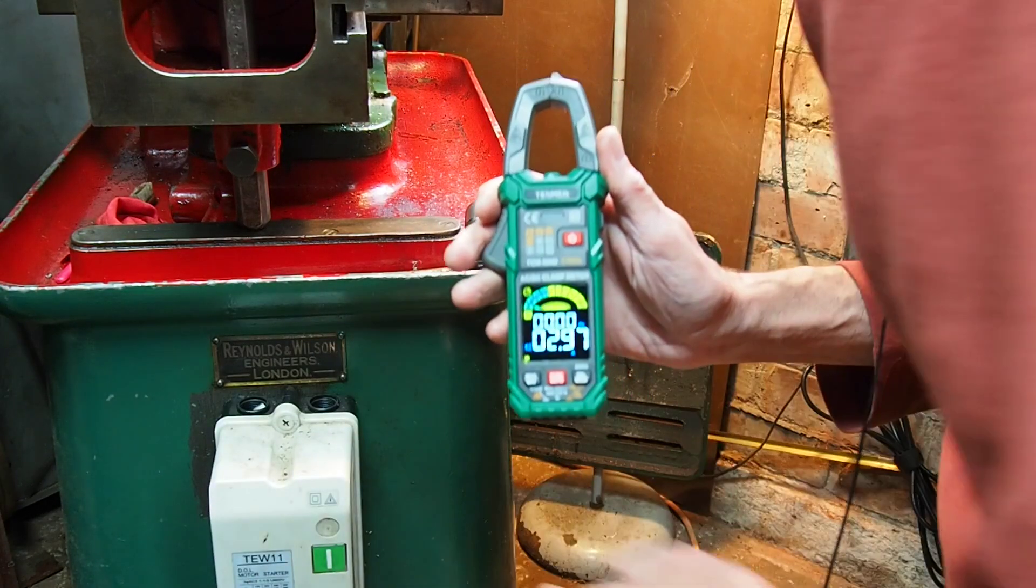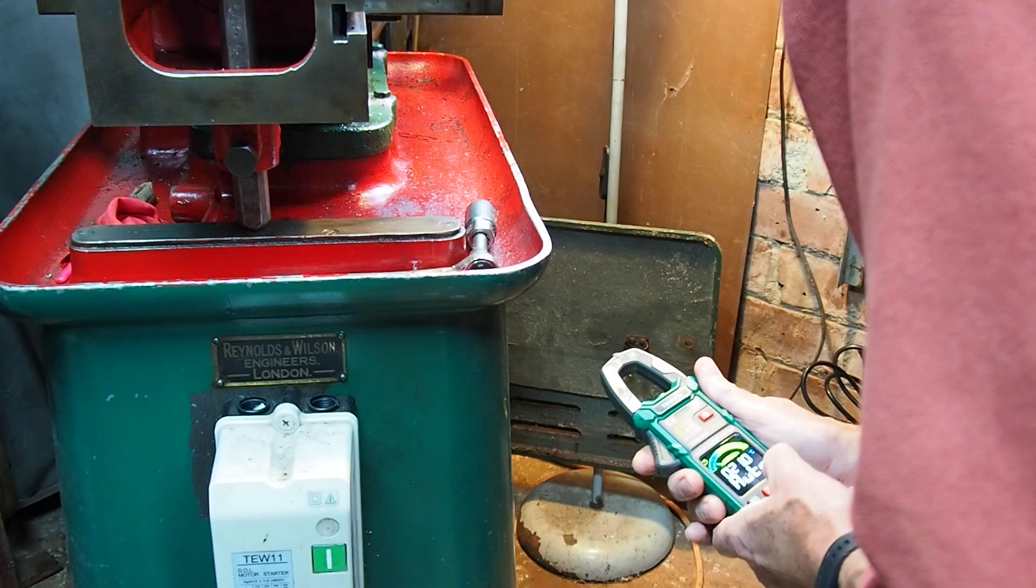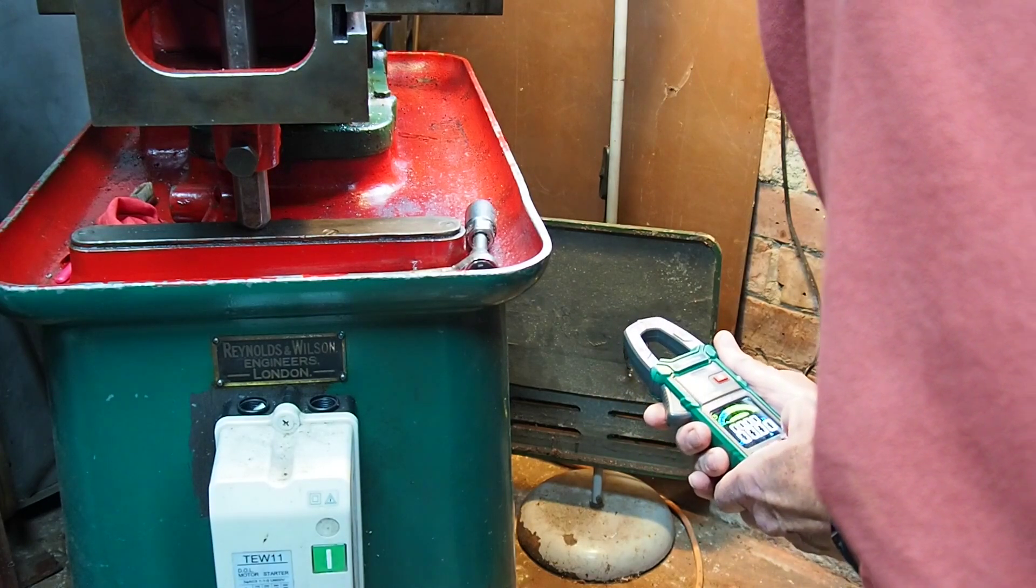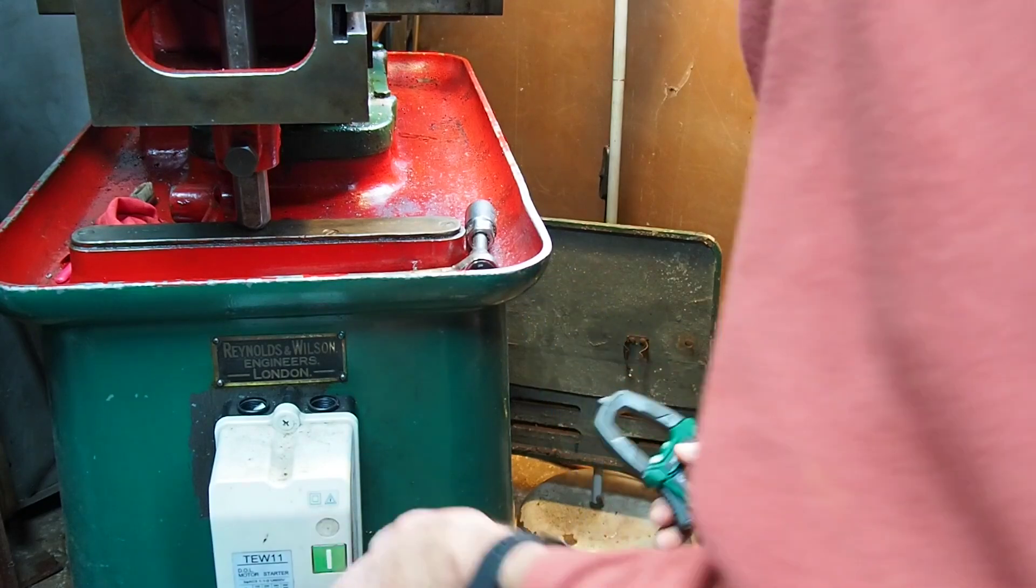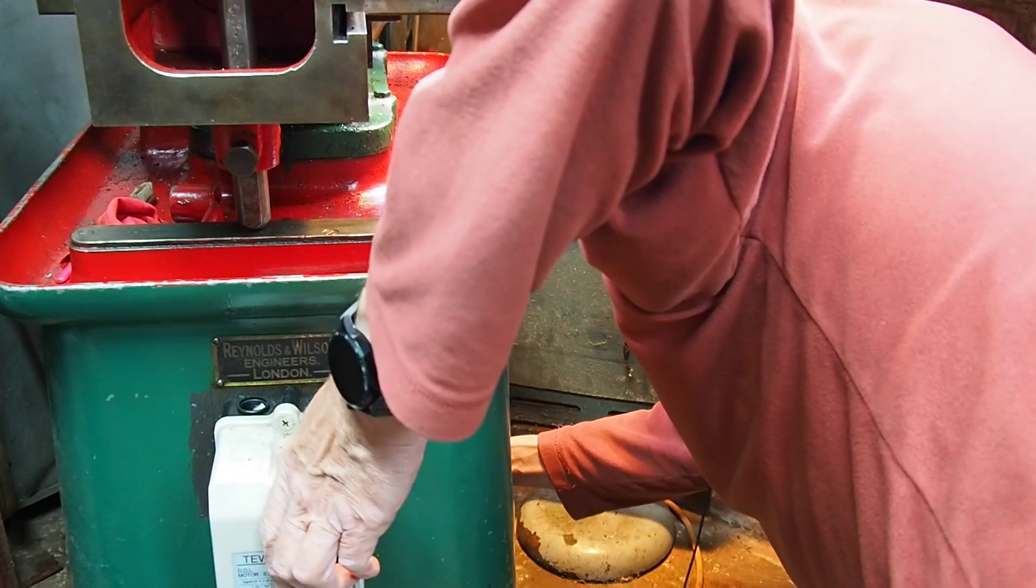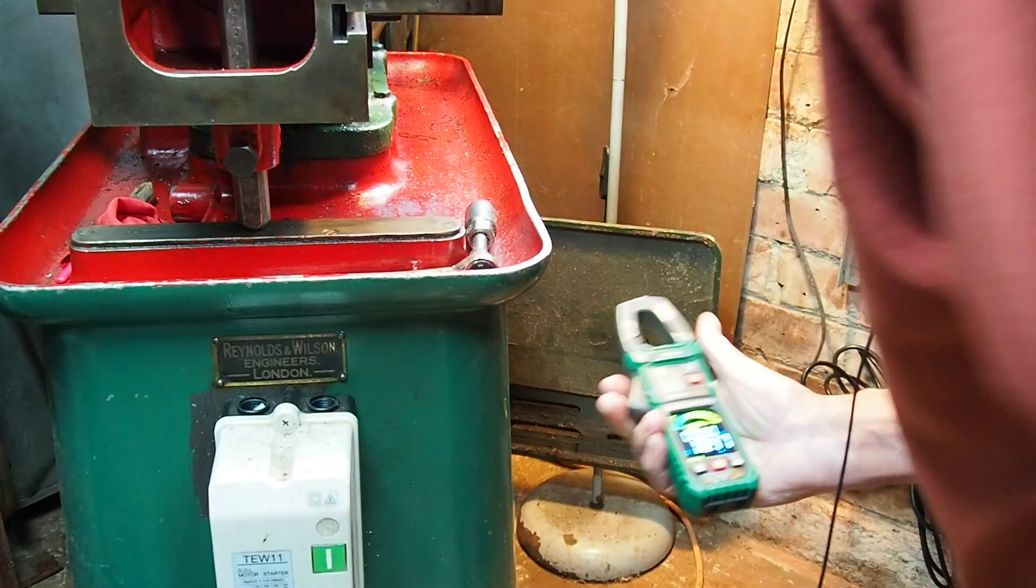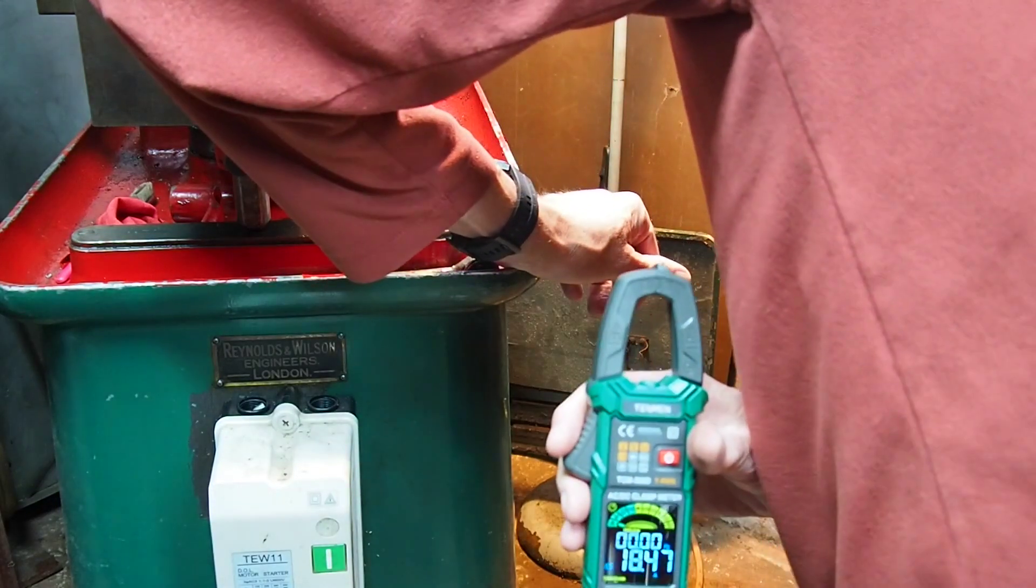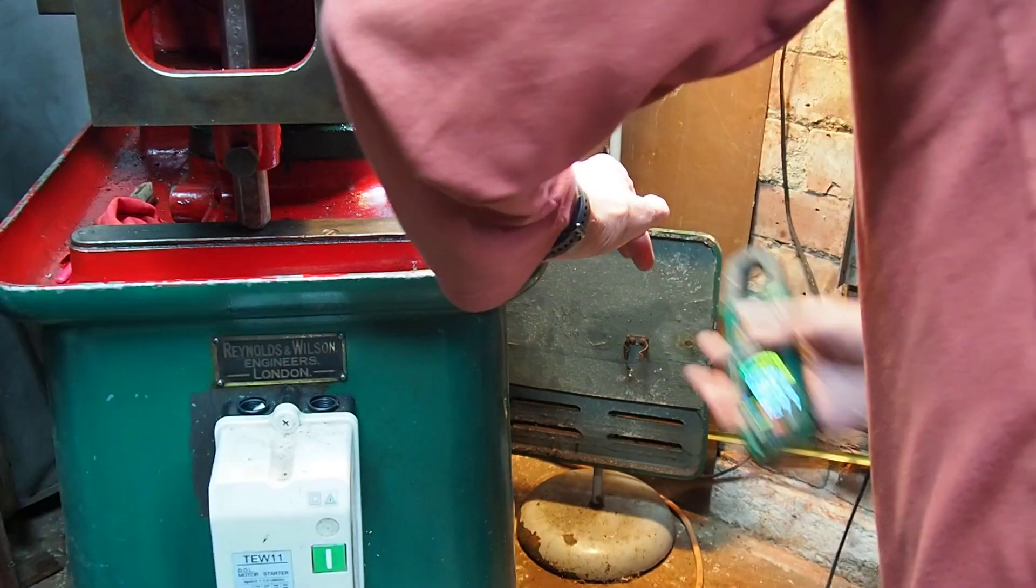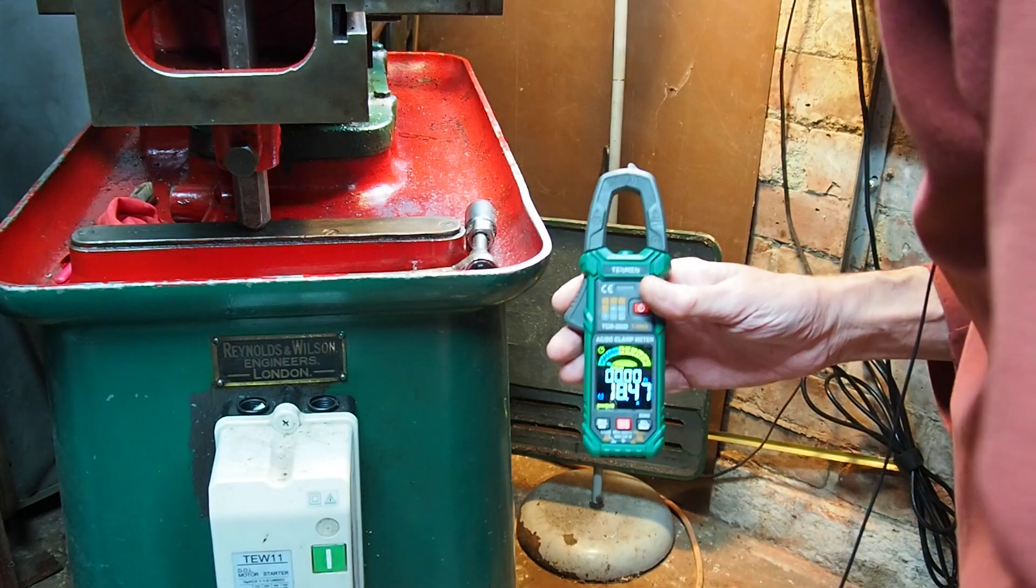Now I'm going to try measuring the inrush current. I've never done this before so I'll be interested to see how it works. We're in amps, we need to select inrush, like so. Then we need to put the meter onto the wire and start the motor. I'll stop it again because we've got a reading. There you go. Briefly it reached 18 amps when it was starting up. That's quite a considerable amount of current before the motor settles down. That's AC current and inrush measurement.